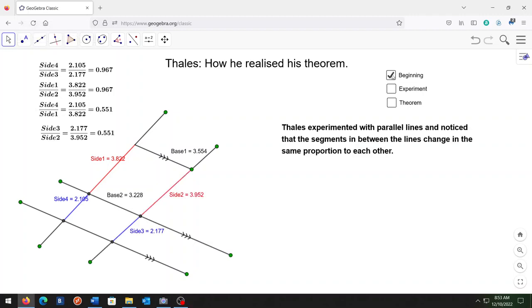In the beginning, Thales experimented with parallel lines and noticed that the segments in between the lines change in the same proportion to each other.